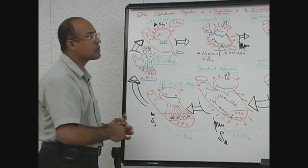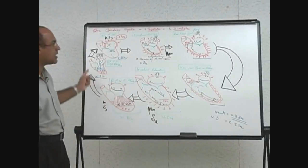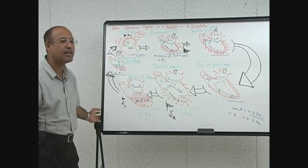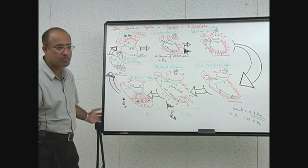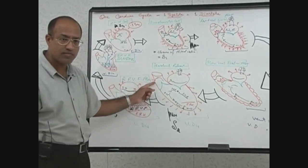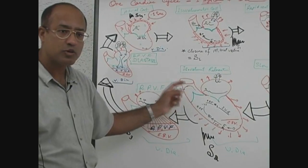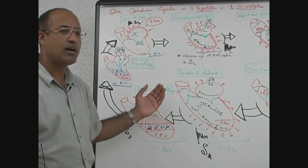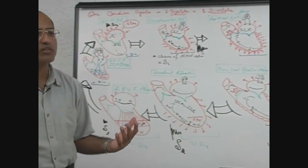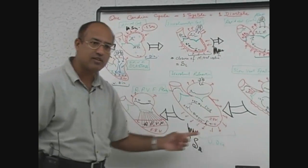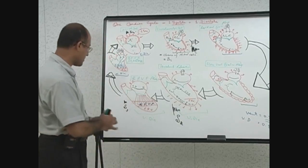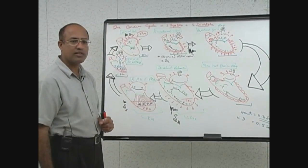The phases shown in the left heart also occur in the right heart, except that pressures on the right side are lower. Aortic pressure varies between 80 and 120 mmHg, while pulmonary artery pressure varies between 8 and 25 mmHg. Left ventricular pressure varies from 0 to 120, while right ventricular pressure varies from 0 to 25. The cardiac events are similar; only the pressures differ.